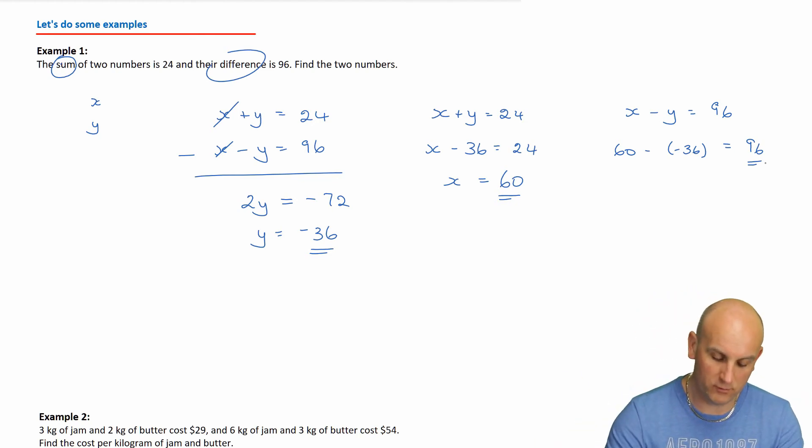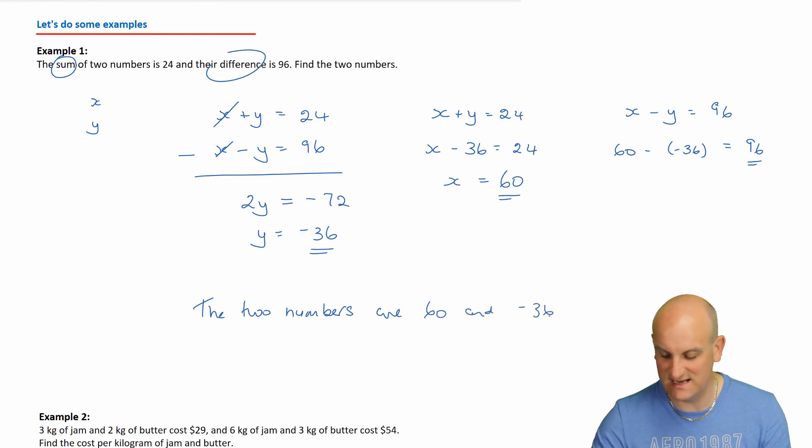So I need to write the two numbers. My two numbers are 60 and minus 36. Again, I don't need to give the order there. It's not important because so long as one of the numbers is 60 and one of them is minus 36, it is good.